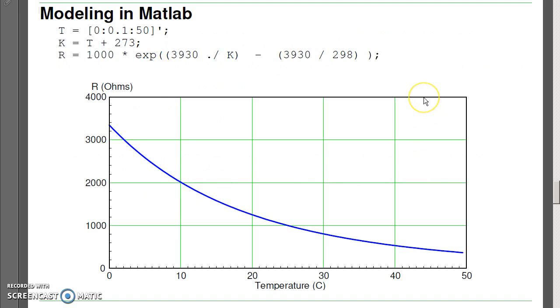In MATLAB, if I plot the temperature between 0 and 50 Celsius, in Kelvin, I can convert Celsius to Kelvin as temperature plus 273. And then from the previous equation, I can calculate the resistance at each temperature. And that gives me this type of characteristic.